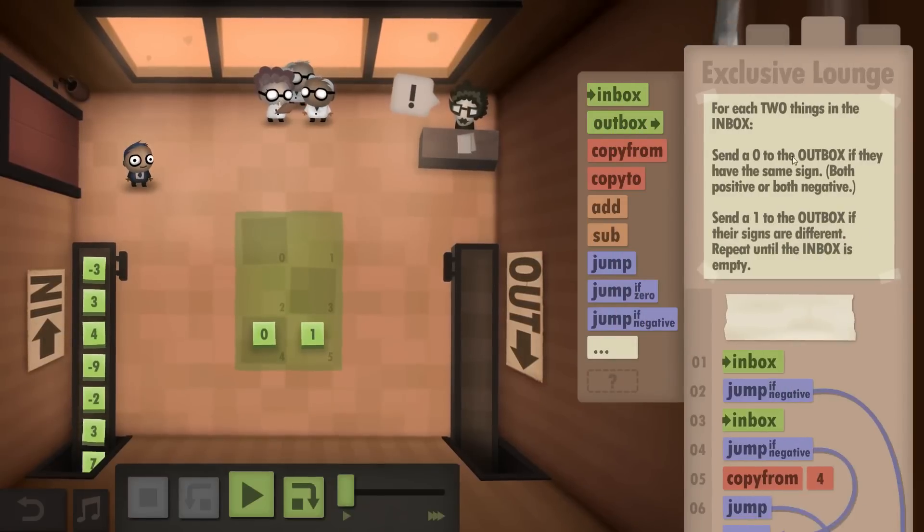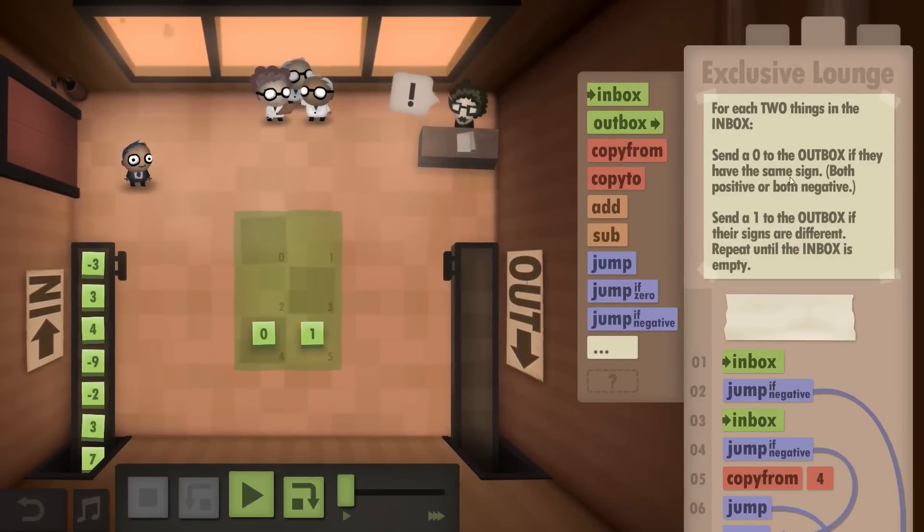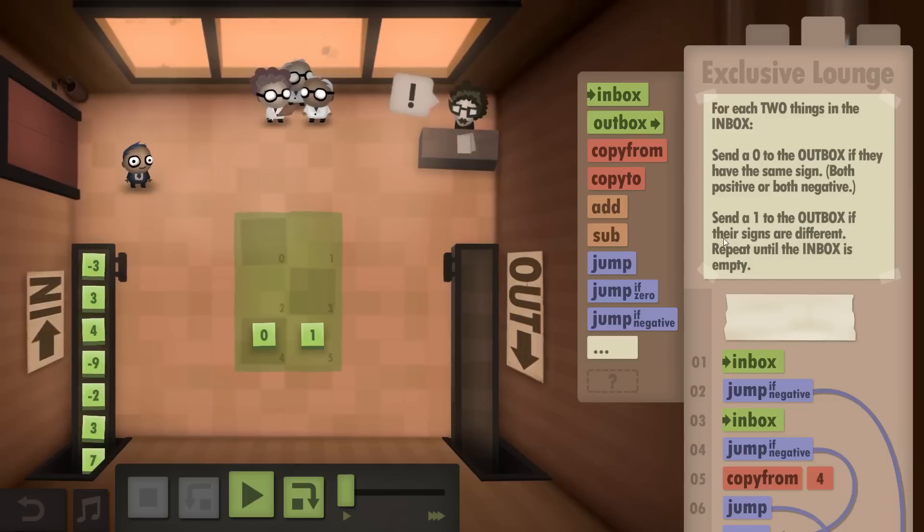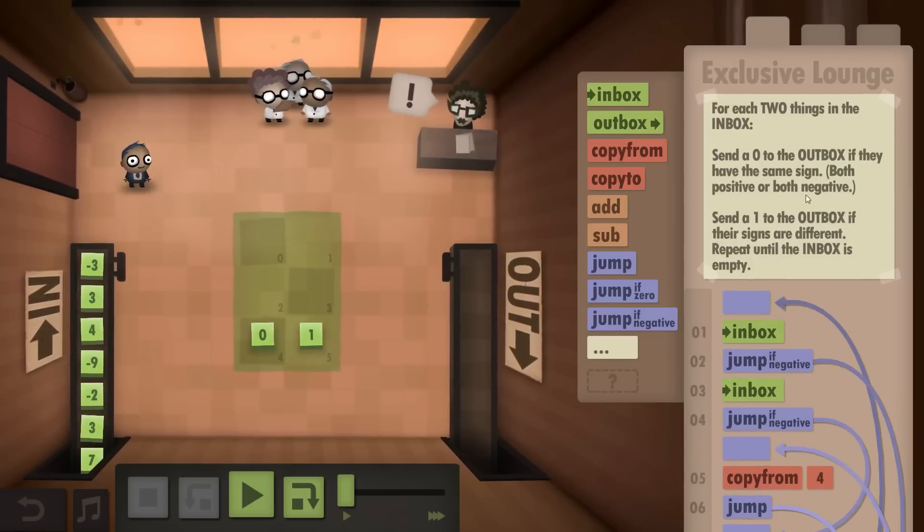So what we are supposed to do is for each two things in the Inbox, send 0 to the Outbox if they have the same sign, i.e. they are both positive or both negative, or send a 1 to the Outbox if their signs are different. And repeat until Inbox is empty, that's just the usual.